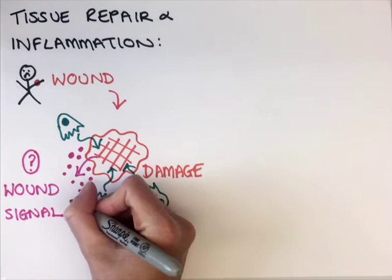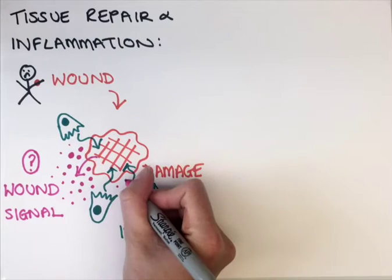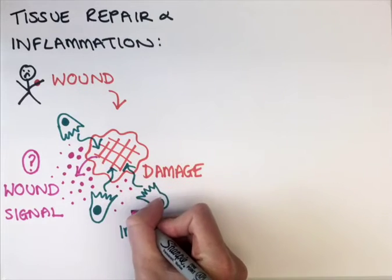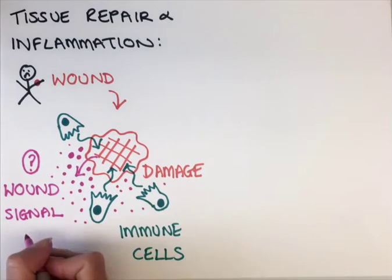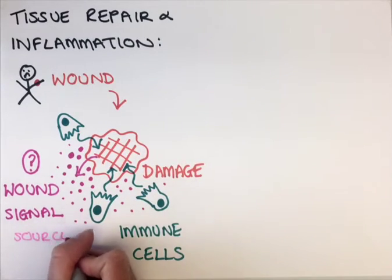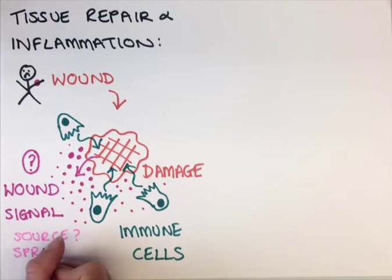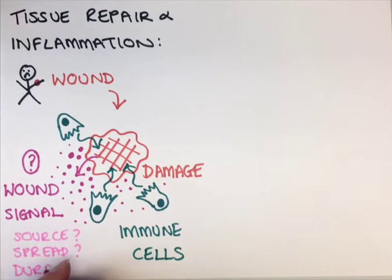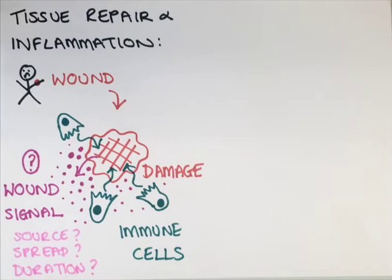As well as knowing the identity of these signals, we want to understand more about their behaviour: where they are released from, how fast they move across the tissue, how far they spread, and how long they persist. To help address these questions, we've come up with a novel approach combining live imaging and mathematical modelling, using the behaviour of the responding immune cells to characterise the nature of the wound attractant.